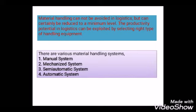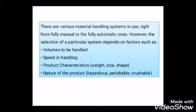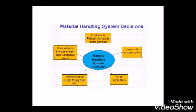Material handling cannot be avoided in logistics but can certainly be reduced to a minimum level. The productivity potential in logistics can be exploited by selecting the right type of handling equipment. Earlier there were manual systems, then came mechanized systems, then semi-automatic and automatic systems — our focus is on the automatic system. The choice depends on how much volume you are going to handle, what speed is required for retrieval and storage of materials, and the product characteristics: weight, size, shape, and nature — whether perishable, crushable, or hazardous.